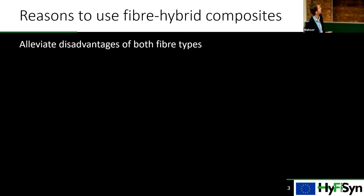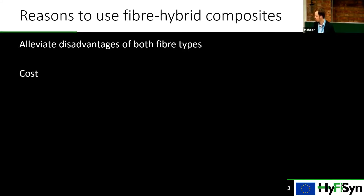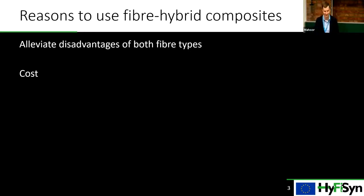What are the reasons to use fiber hybrid composites? The most obvious one is to try and alleviate disadvantages of one or both of the fiber types. For example, you add glass to a carbon fiber composite because carbon is too brittle — with the addition of the glass it becomes less brittle. There was a brief audio interruption from online, but everything looks fine.